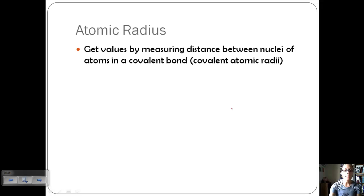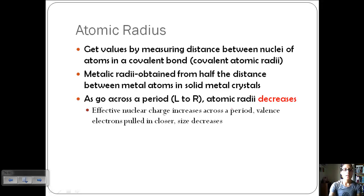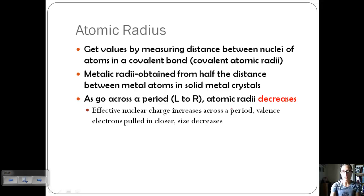Let's talk about the third trend: atomic radius. We get these values by measuring the distance between the nuclei of atoms in a covalent bond. For metallic atoms, this is obtained from half the distance between metal atoms in a solid metal crystal. In general, as we go across a period from left to right, atomic radii decreases because the effective nuclear charge increases, pulling valence electrons in closer — they're shielded less, so the size decreases.